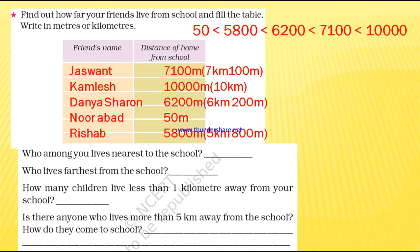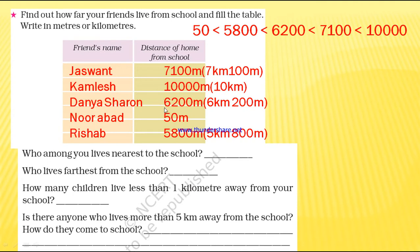When we compare large numbers, first we count the digits of each number. The number with the fewest digits is the smallest. Noorabad has the fewest digits, so 50 meters is the smallest distance. Among the remaining children with four-digit numbers — Rishabh, Dhanushwaran, and Jaswant — Rishabh's 5800 is the smallest. Then comparing 6200 and 7100, six thousand two hundred is smaller. Then 7100, and finally the five-digit number 10,000. So here we arranged in increasing order, ascending order.